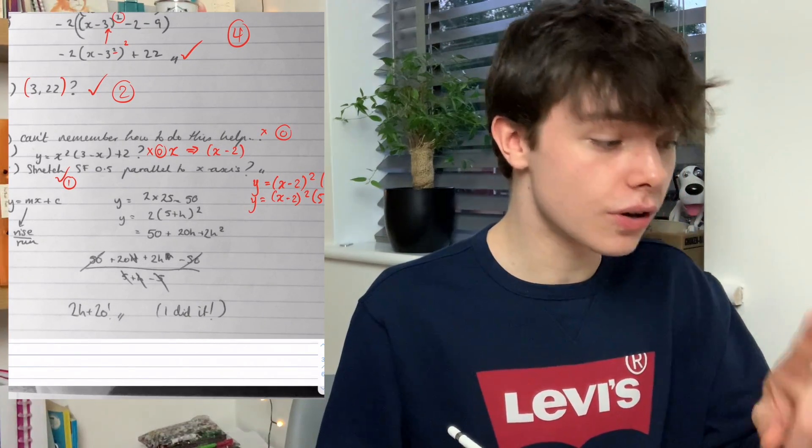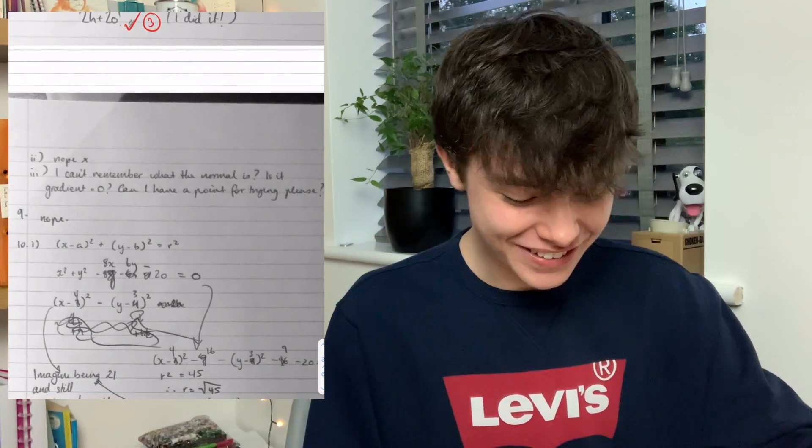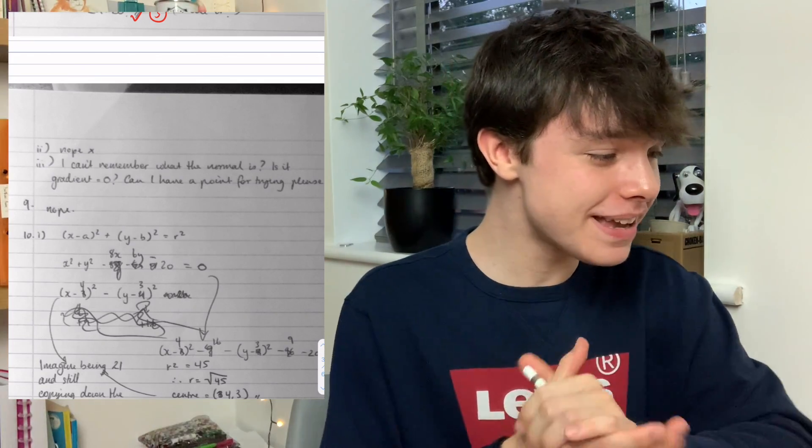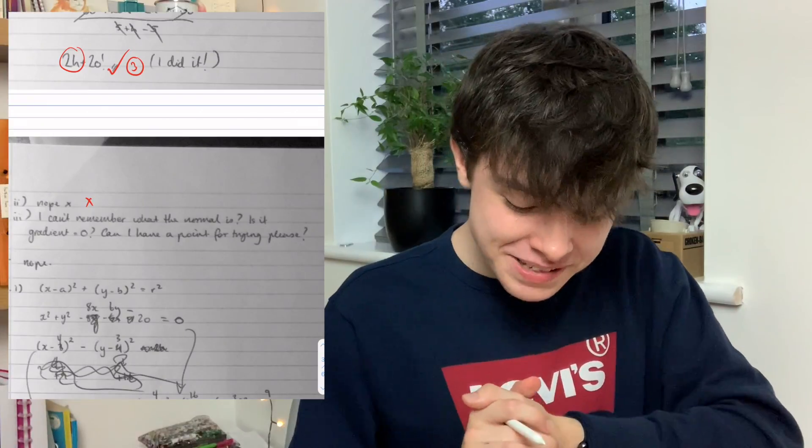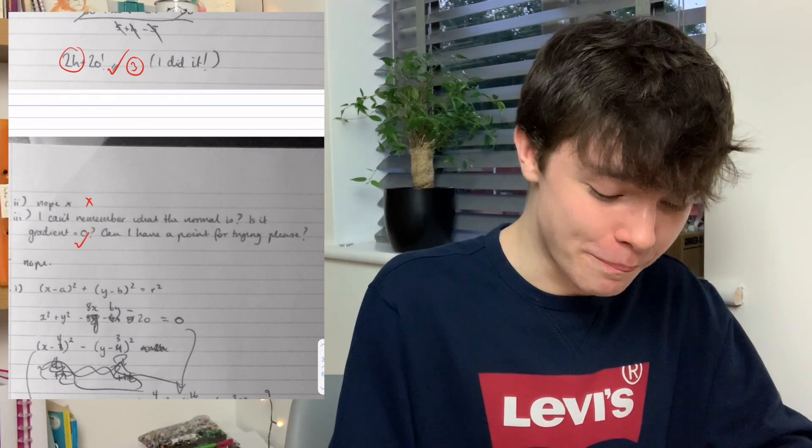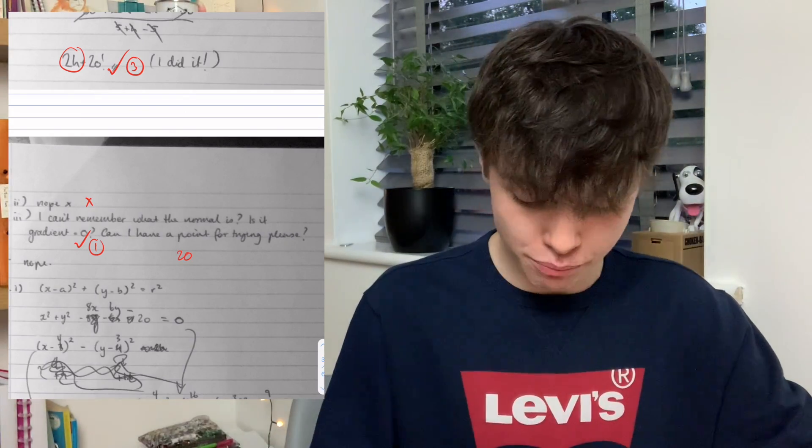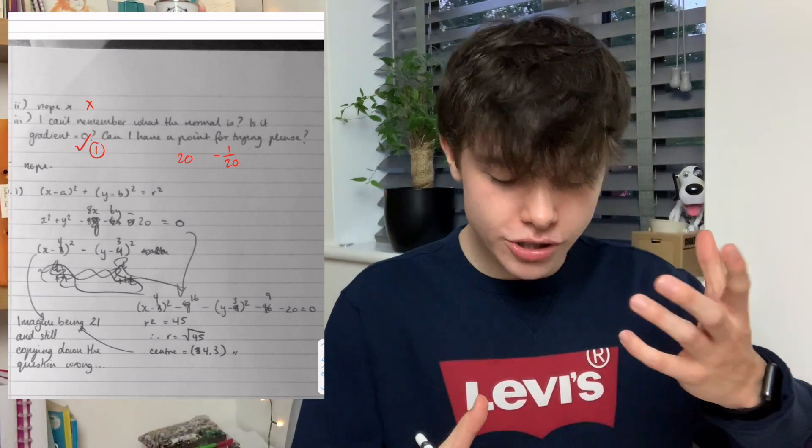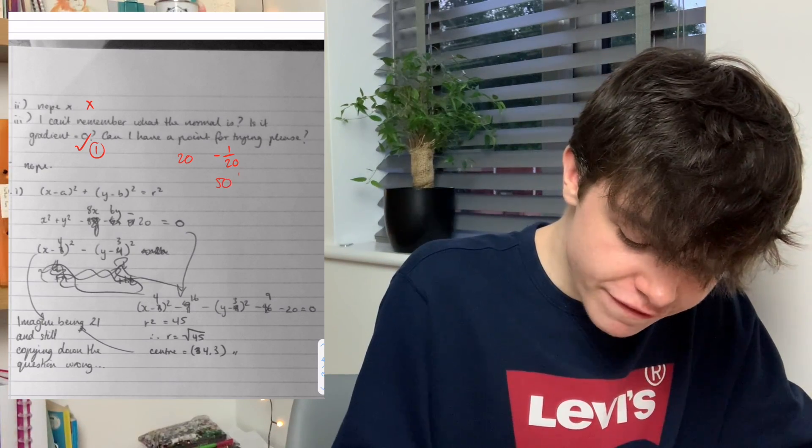Question eight. Astrid said I did it. You did. It was a proof question I think. We got the answer so we can have three marks there. Then question two or the second part just says nope. It basically needed you to say as h tends towards zero the gradient will be 20. But we didn't get an answer for that one. The third part says I can't remember what the normal is, is it gradient equals zero? Can I have a point for trying please? Yeah, we'll give you one point. The gradient is parallel, no it's not, it's perpendicular to the tangent. Therefore the perpendicular gradient is the negative reciprocal, so it would be 1 over 20 with a minus sign, so minus 1 over 20. Then you could substitute that into y equals mx plus c to find the y coordinate when x was zero. Your answer for that one would have been 50 and a quarter.